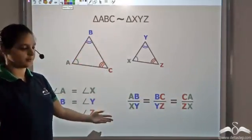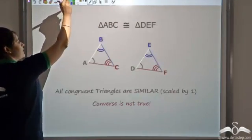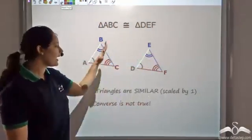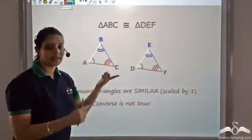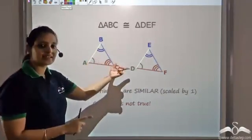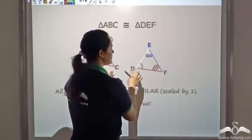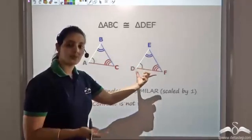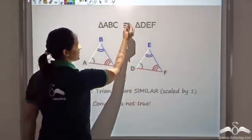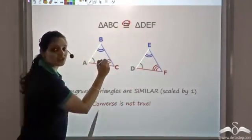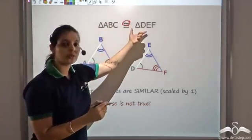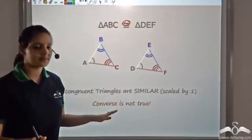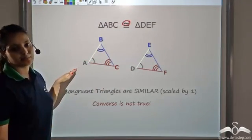Now let's look at congruence. When two triangles are congruent, all the angles are equal and all the sides are also equal. So the triangle is scaled by a factor of 1 — the size and shape are both the same. Since the shape is the same, congruent triangles are always similar as well.